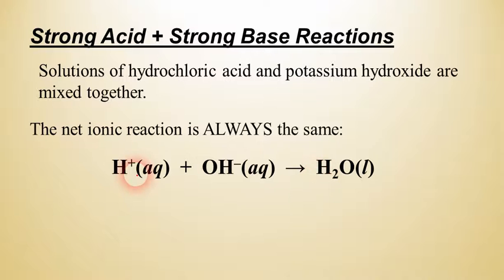We'll have H plus plus OH negative yields water. So if we recognize that there's a strong acid, one of our big six, and then one of the eight strong bases, this is the net ionic equation we can write for that.